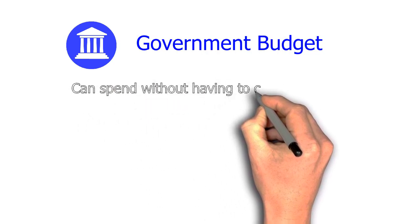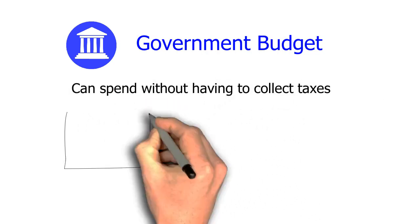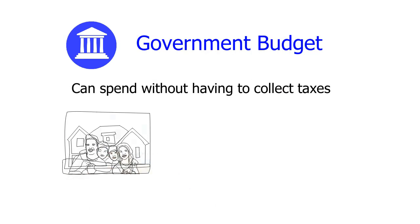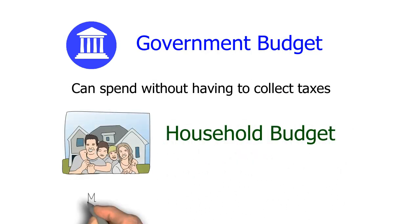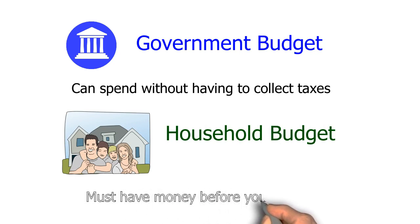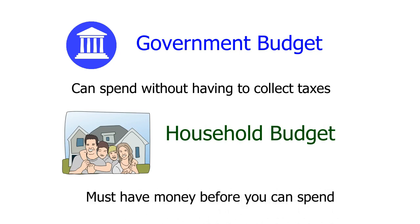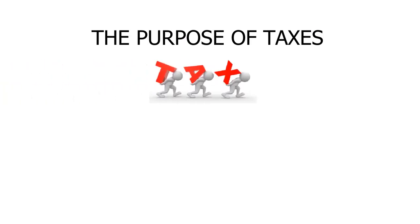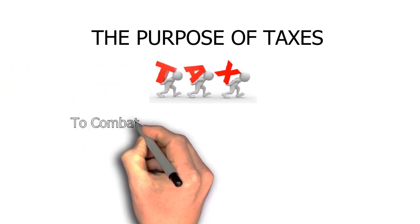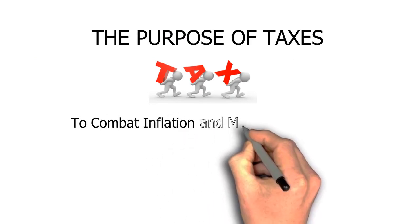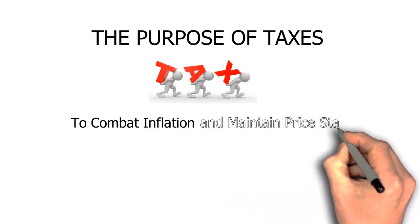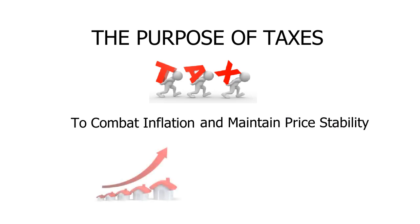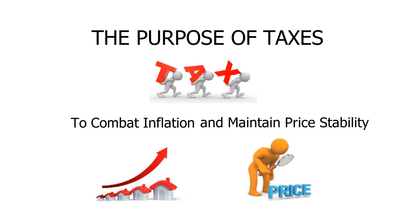It must be understood that the budget of a government that can produce its own sovereign currency and spend without having first to collect taxes is very different from what we might intuitively believe a budget should be, based on our knowledge of an everyday household budget where you must have money before you can spend. This does beg the question: if a government that can produce its own currency can spend without having to collect taxes, what is the purpose of collecting taxes in the first place? Taxes are used to combat inflation and maintain price stability. If there's too much money in the economy, which might cause inflation, taxes can be used to remove money from the economy.